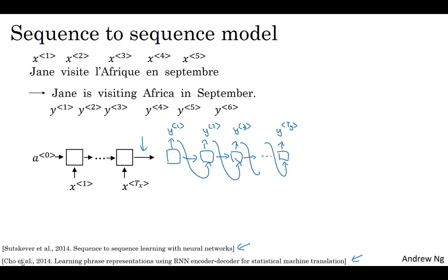One of the most remarkable recent results in deep learning is that this model works. Given enough pairs of French and English sentences, if you train a model to input a French sentence and output the corresponding English translation, this will actually work decently well. And this model simply uses an encoder network, whose job it is to find an encoding of the input French sentence, and then use a decoder network to generate the corresponding English translation.